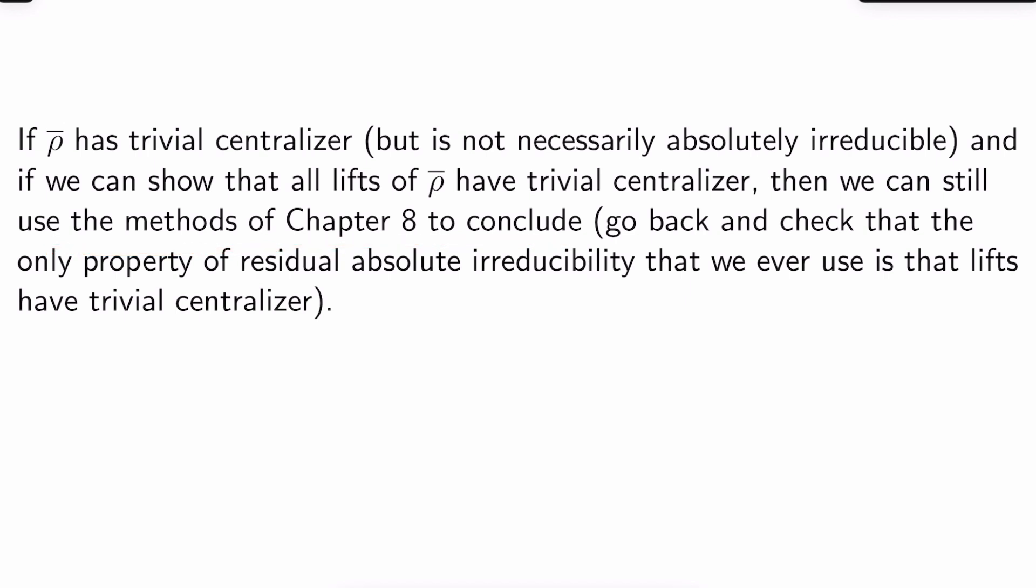The reason for this is if you go back and look at the proofs of the main results in Mazer's chapter in the chapter 8 playlist, the only property of residual absolute irreducibility that we ever use is that its lifts have trivial centralizer. We never fully use absolute irreducibility of the lifts anywhere. So it suffices to check that all lifts of ρ̄ have trivial centralizer.